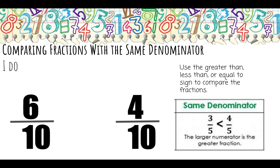Here, both of my denominators are ten, so the fraction with the larger numerator is the greater fraction. Ten pieces of cake on two different cakes — if I ate six pieces on the first cake and you ate four pieces on your cake, who ate more? Me. Six-tenths is greater than four-tenths.